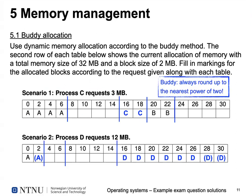Question five was about memory management. We discussed the buddy allocator — a dynamic memory allocation method where allocatable areas are split in powers of two, and all allocations are rounded up to the nearest power of two. We had a memory of 32 megabytes split into 2 megabyte blocks (0 through 31), with some initial allocations: the first 8 megabytes allocated by A and two megabytes by B. You had to figure out the final memory layout after executing requests in given scenarios — which were independent from each other.